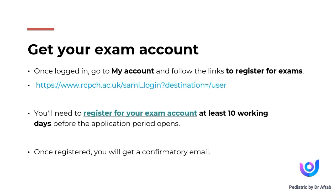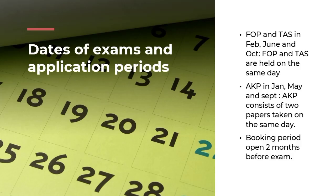Next, you have to register for your exam. Log in to your account by clicking the three lines in the upper right side of the screen, then go to 'My Account.' There you will find the option to register for the exam. You will need to register your exam account at least 10 working days before the application period opens. Once registered, they will send you a confirmation email with your RCPCH number.